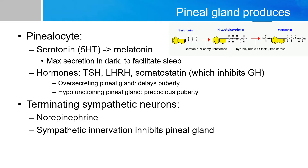Pinealocytes also produce hormones such as TSH, LH releasing hormones, and somatostatin. Somatostatin inhibits growth hormone. So if the pinealocytes over-secrete these hormones, it will delay puberty due to the somatostatin effect. If the pinealocytes under-produce these hormones, it will lead to precocious puberty.